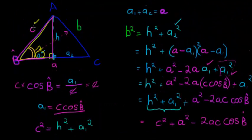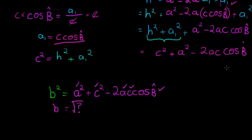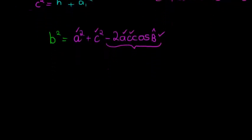Looking at the original sketch, I had sides C and A - the two sides that formed angle B - and angle B itself. The formula has everything I need to calculate B squared, and then I take the square root to get the final length. Notice the cosine rule looks very much like the Pythagorean theorem with an extra term at the end - it's almost like Pythagoras modified.